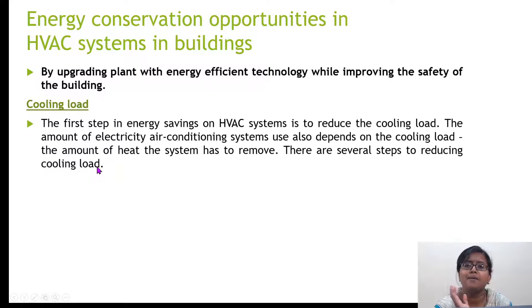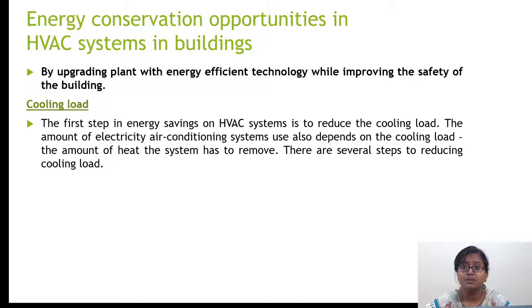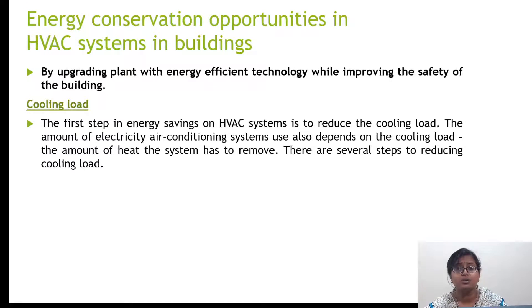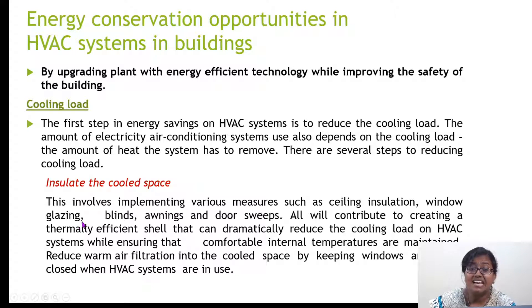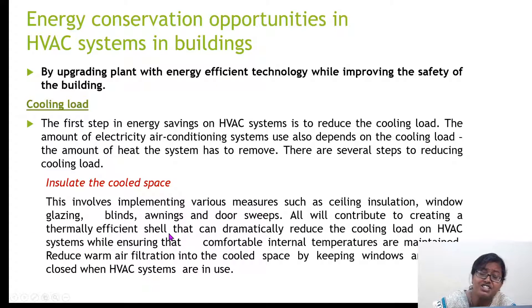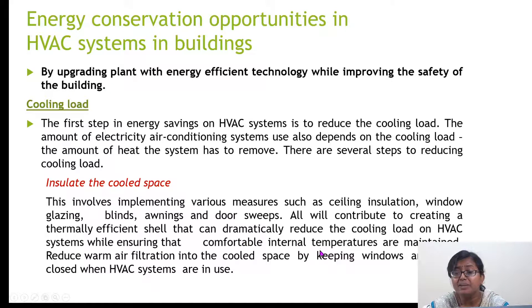Take a practical example: when AC is turned on, we say 'please close the door' and shut all the windows. We do this so that heat energy from outside does not come inside; otherwise the energy consumption of the air conditioner will be more. This is about managing the cooling load. To insulate the cooled space, various measures are implemented such as sealing, insulation, window glazing, blinds, awnings, and door sweeps — all contributing to creating a thermally efficient shell that dramatically reduces the cooling load on the HVAC system.